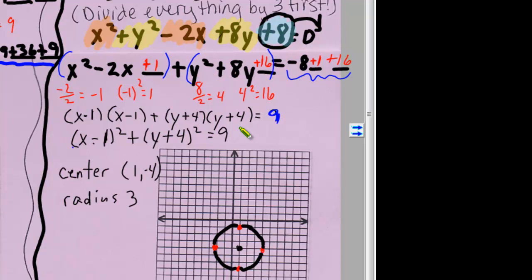Now I have my center at 1 negative 4. My radius at 3. And this is the graph you should have gotten.